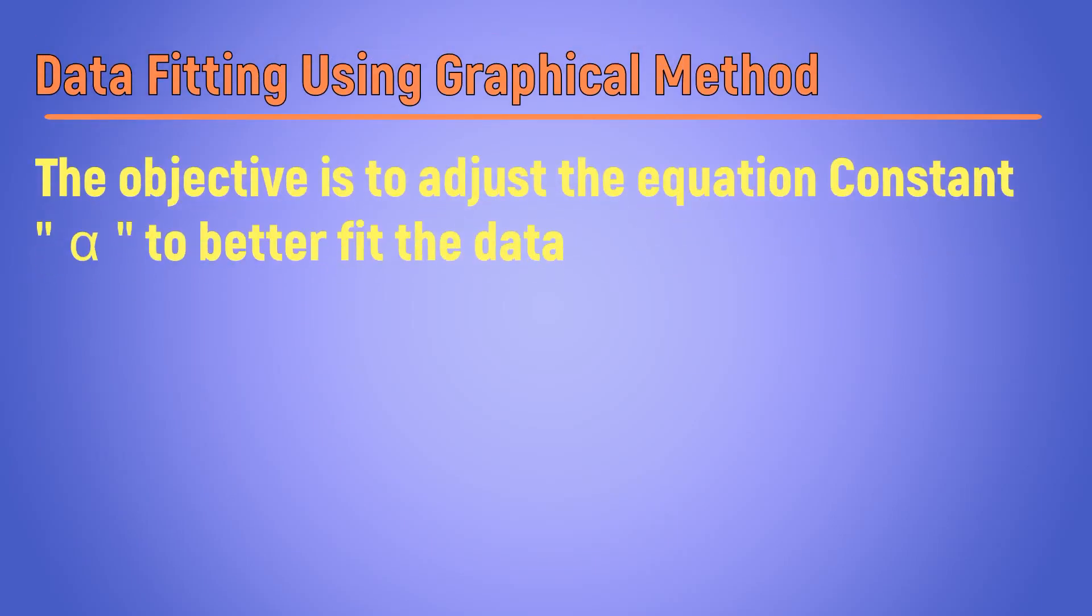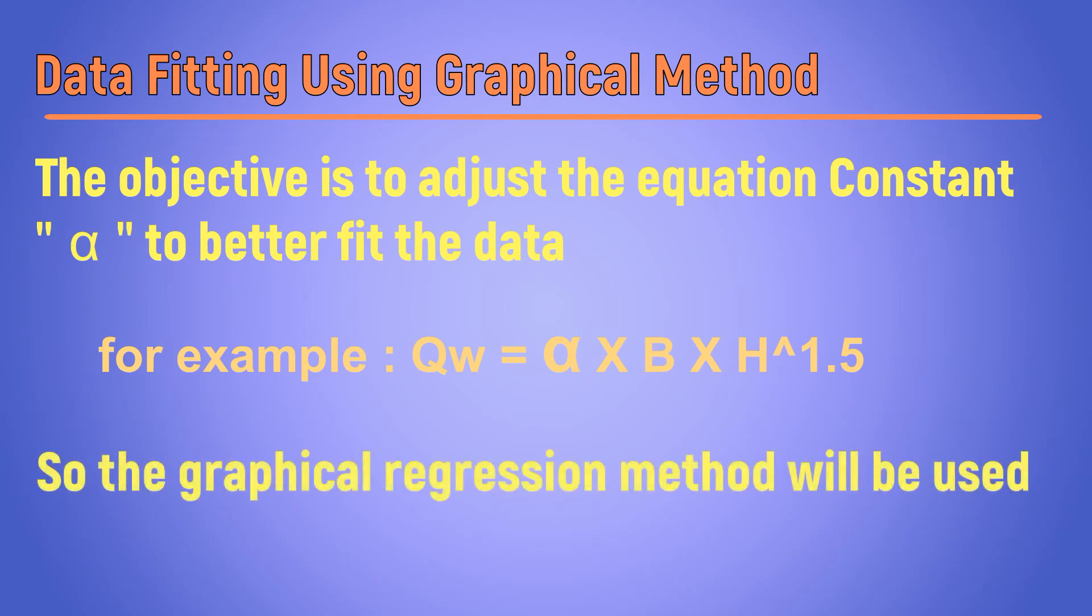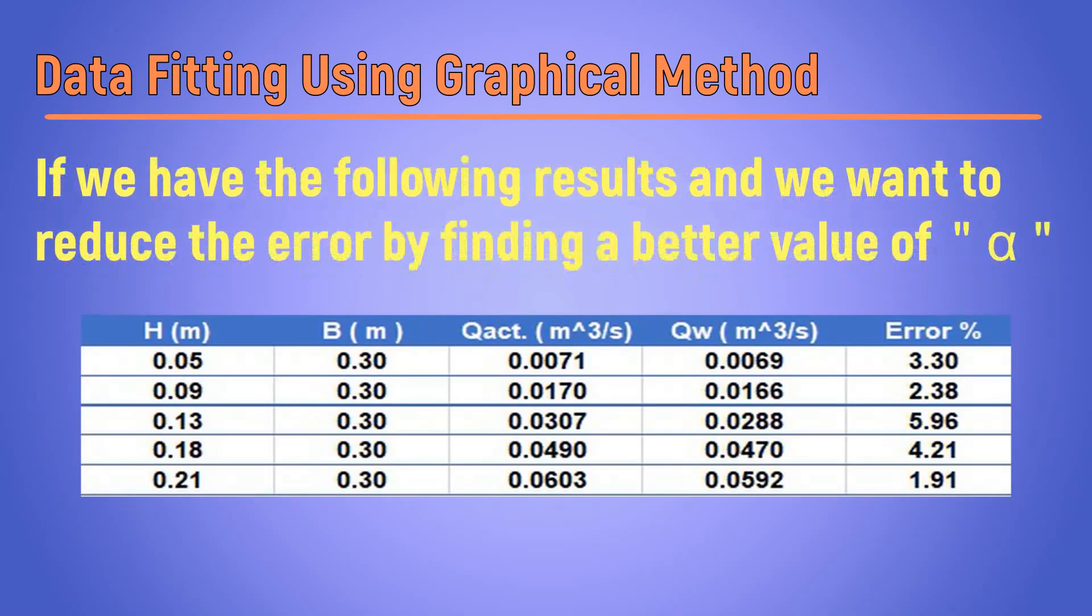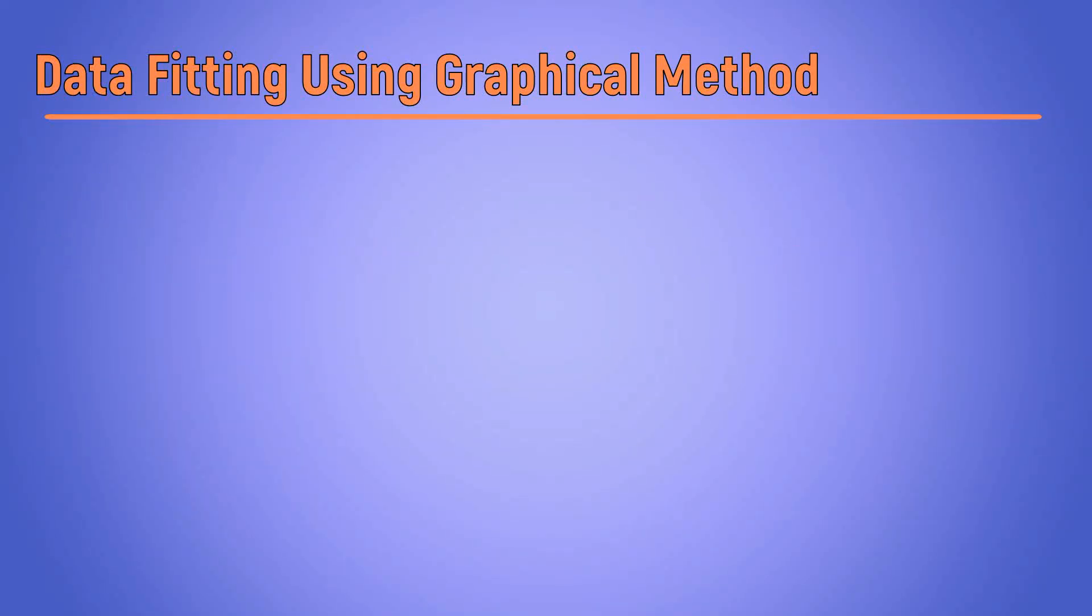If you would like to adjust the equation constant alpha to better fit the data, for example for the weir equation, we will use the graphical regression method. Let's say that we have the following results and we want to reduce the error by finding a better value of alpha. First of all, we have to linearize the equation using the shown method.